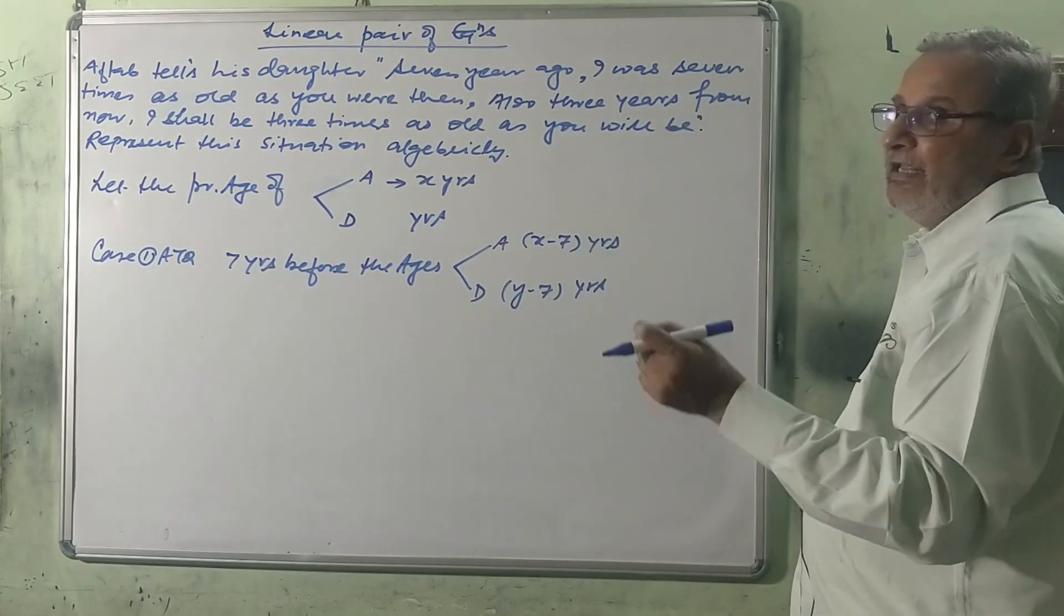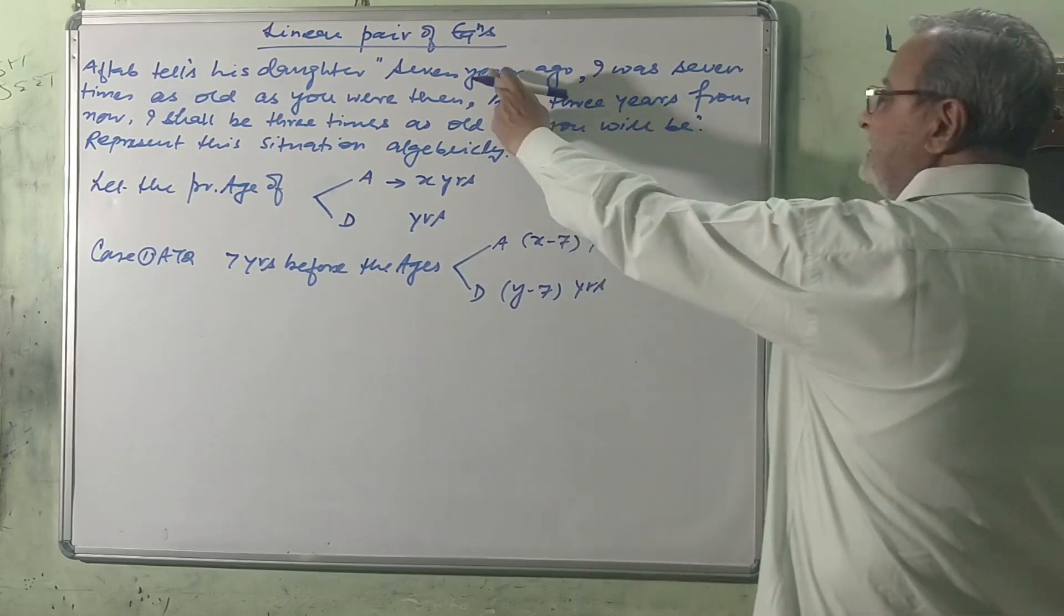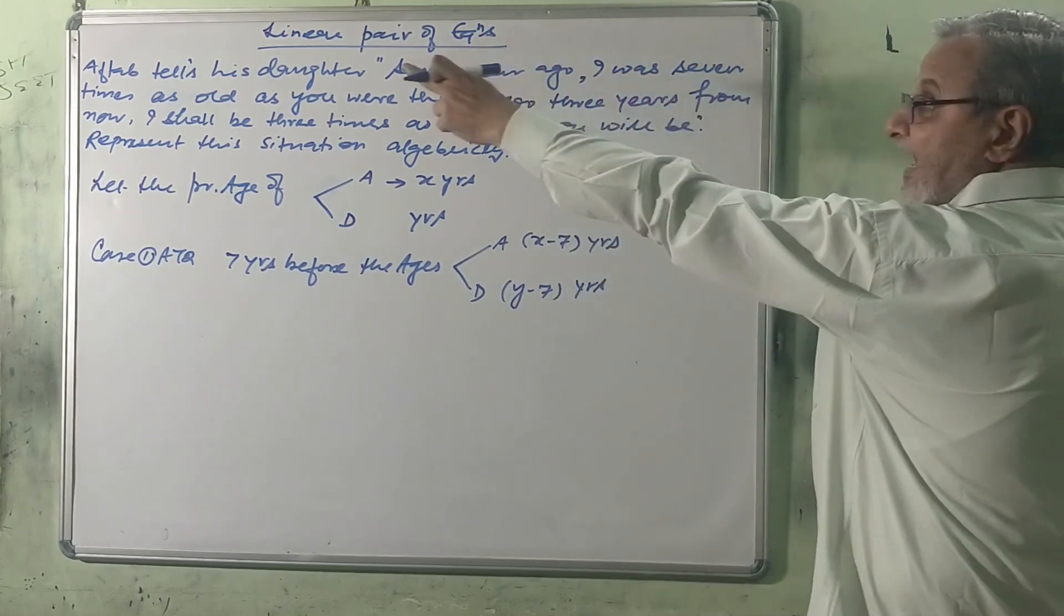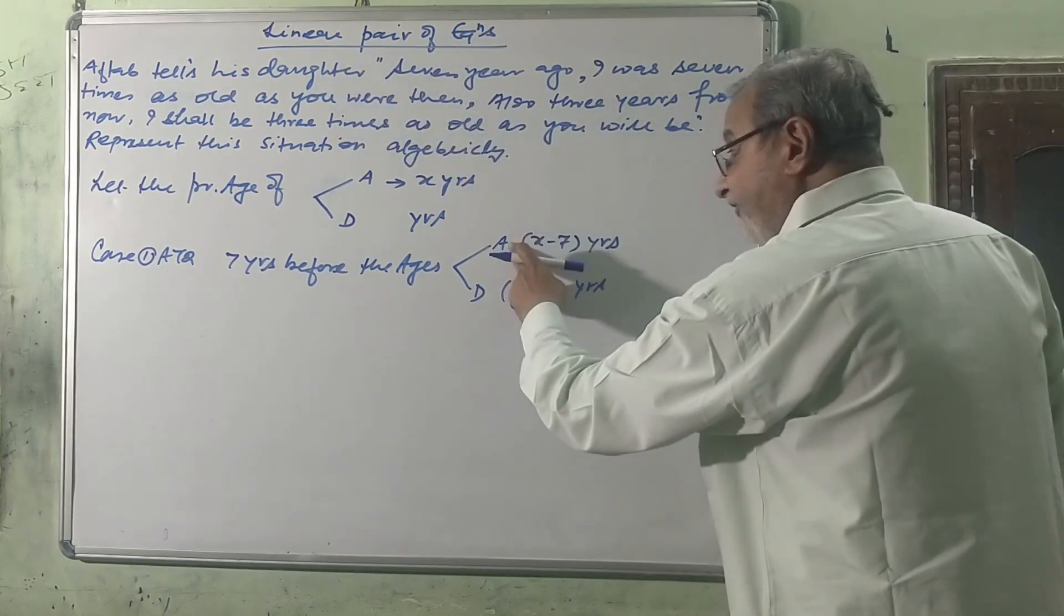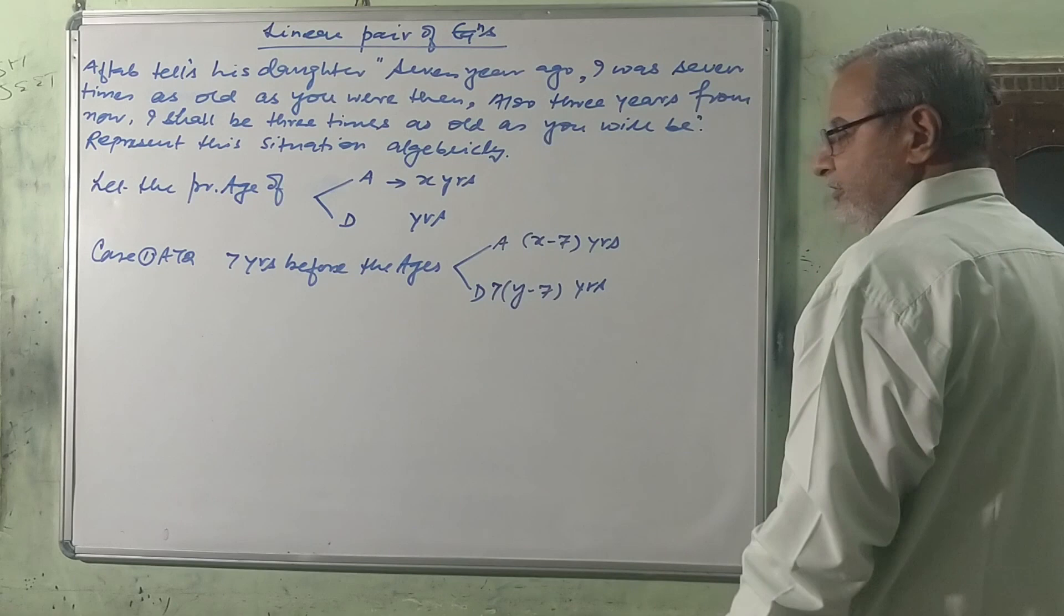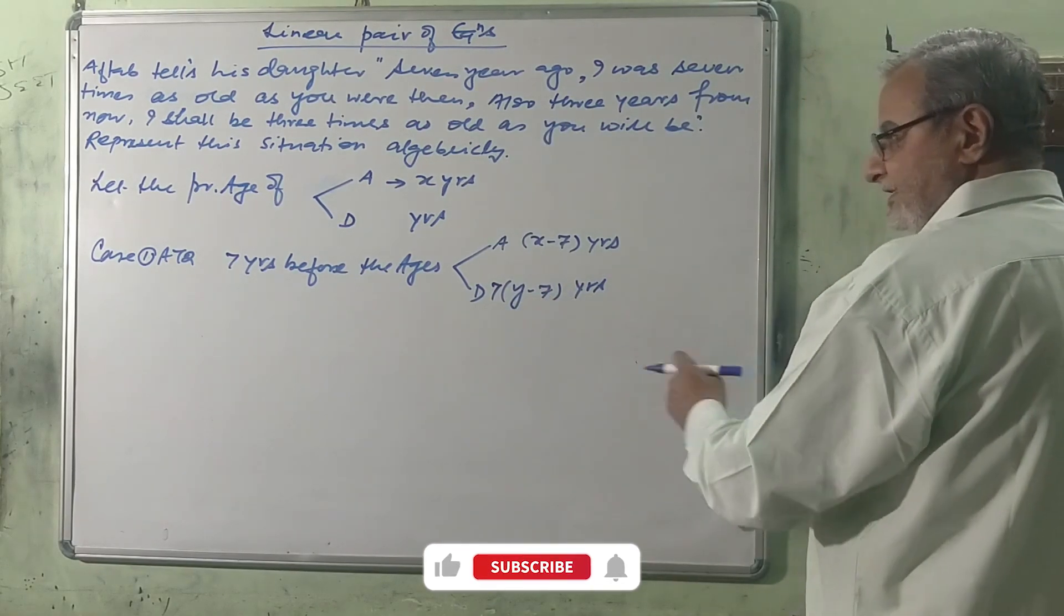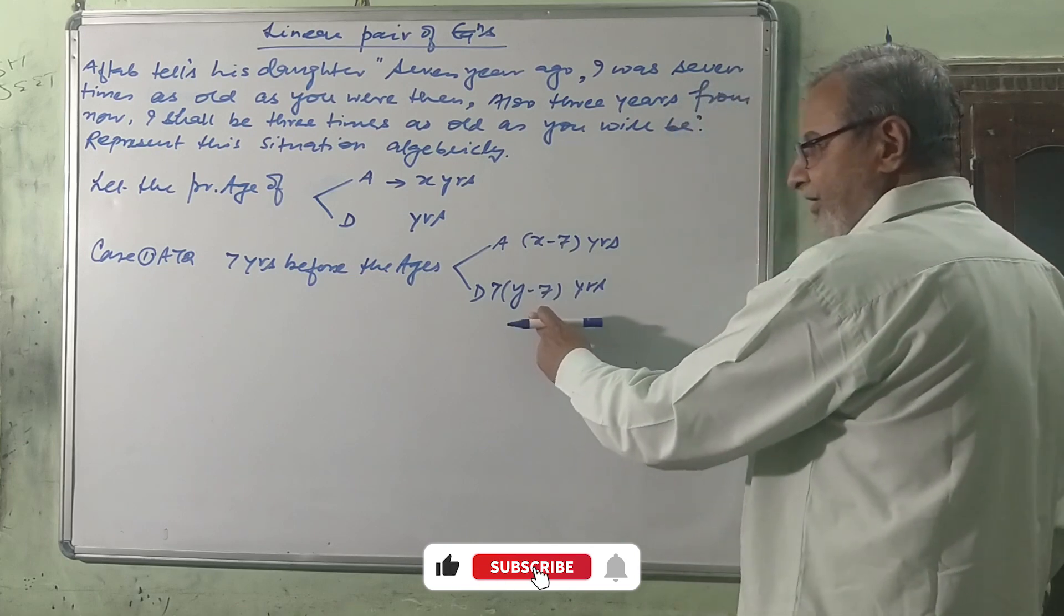So now put the condition. The condition says seven years ago I was seven times, so I will multiply by seven to his daughter's age. Now both are equal, hence...